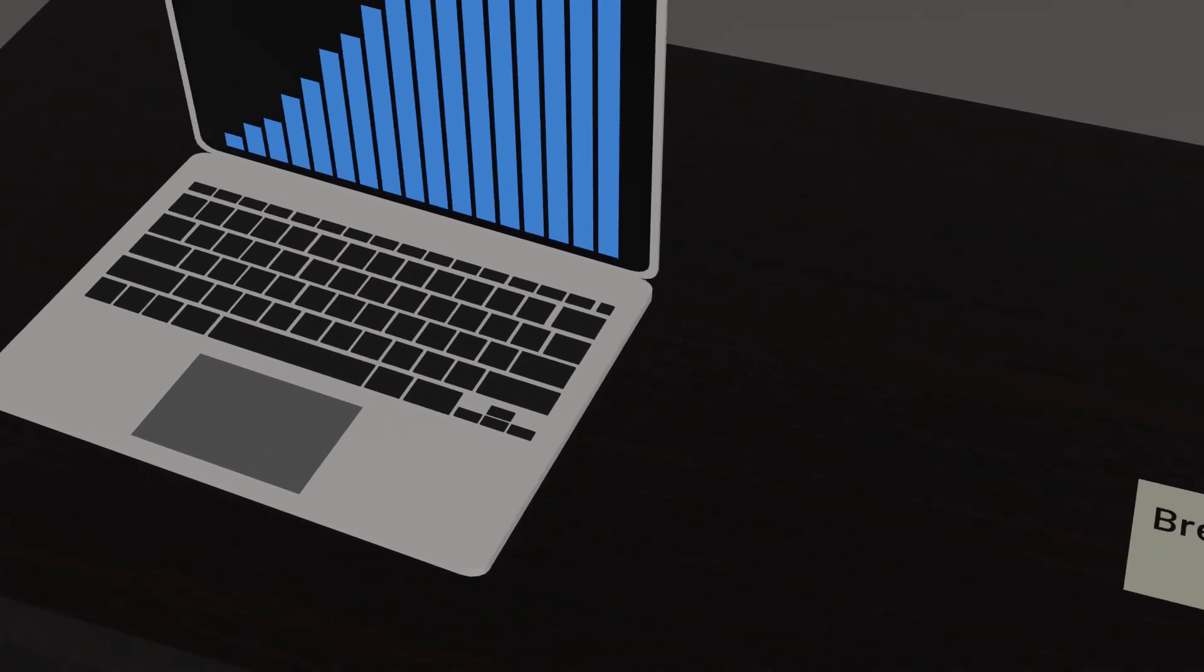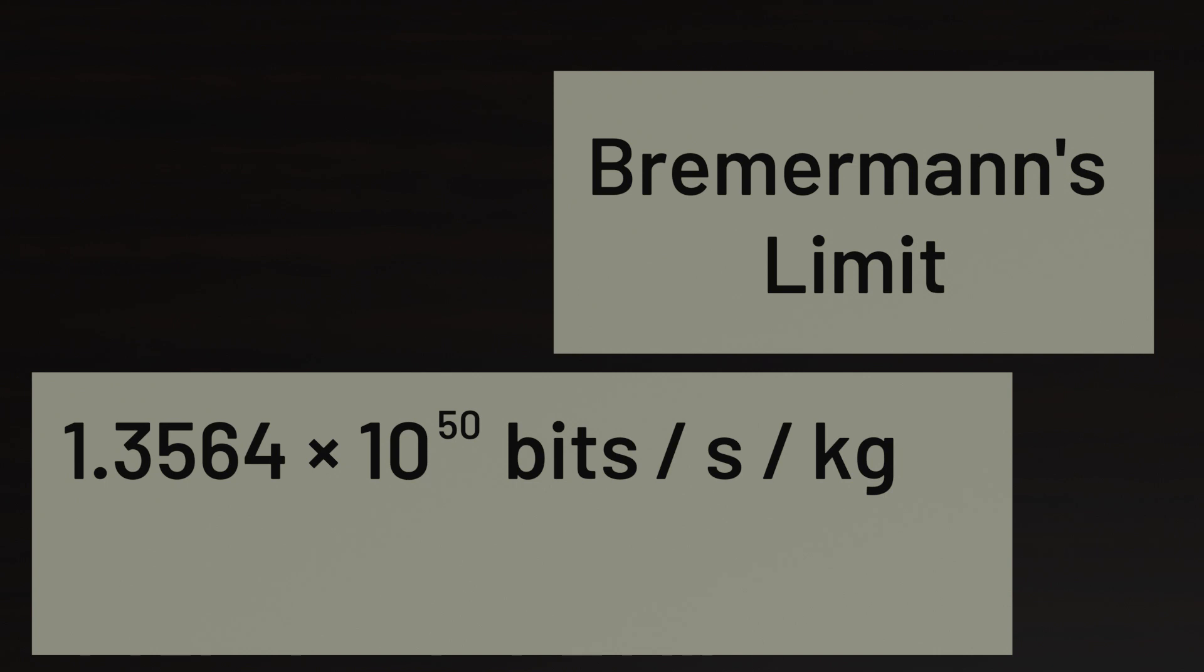It turns out there is a limit, referred to as Bremermann's limit, named after the mathematician who described it. And the limit is about 1.3564 times 10 to the 50 bits per second per kilogram. In other words, a computer with a mass of one kilogram could process no more than 135 trillion trillion trillion trillion bits of information every second. That's quite a lot of information processed very quickly.